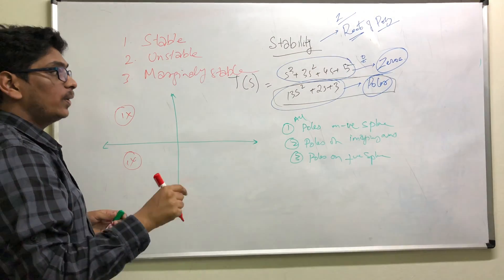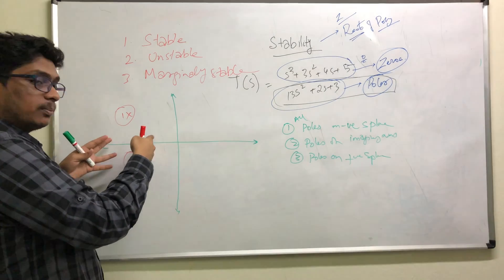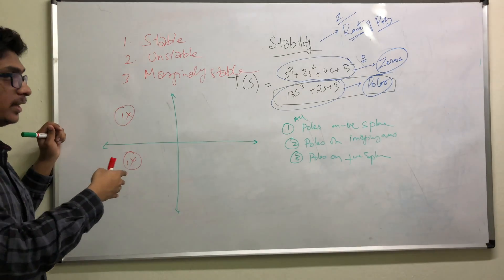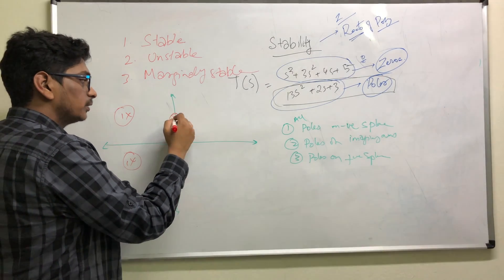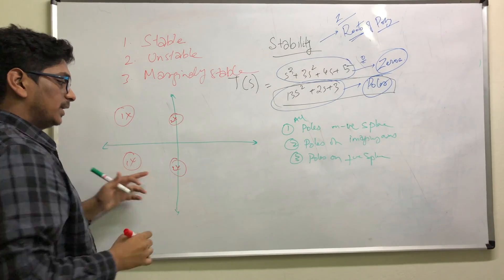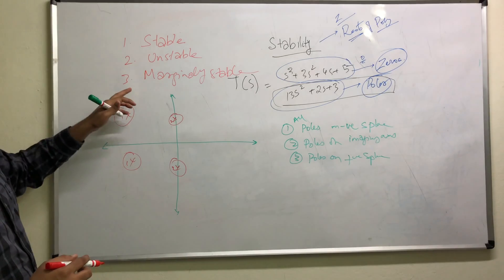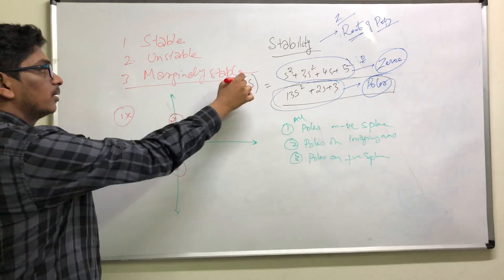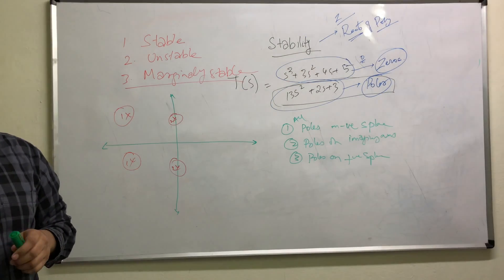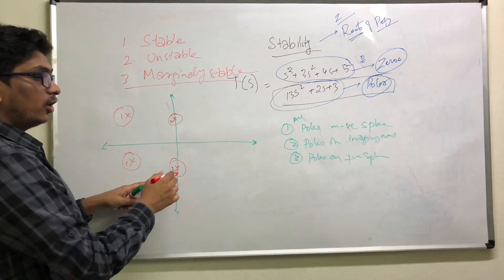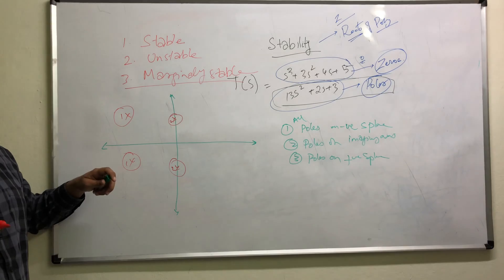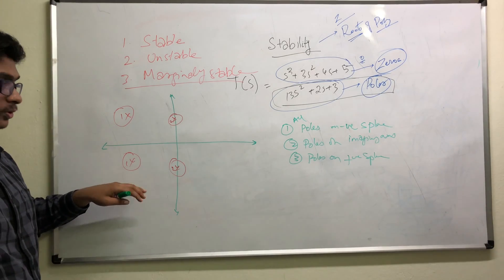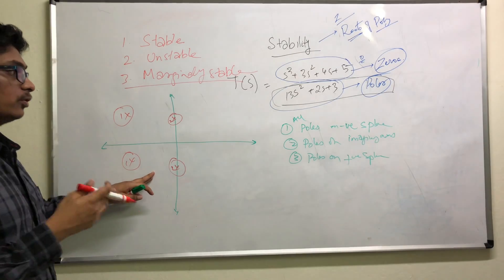However, if all the poles are actually on the left plane, but there are some two repetitive poles on the imaginary axis, then the system is said to be marginally stable. Or, limited stability. The system is also said to have limited stability. If you have MCQs in your mids, you might look for it.